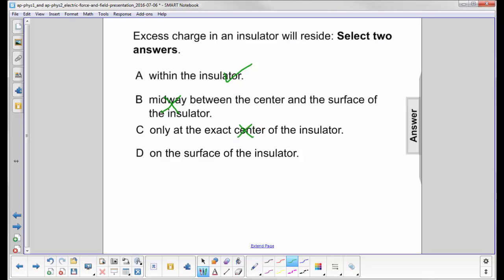They move short distances, so any place within the insulator, you can have electrons or an excess charge residing.